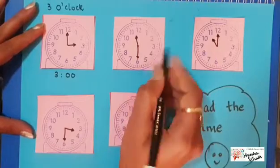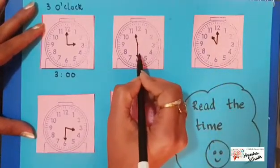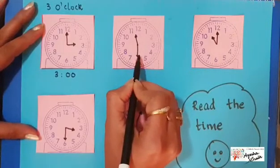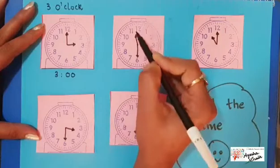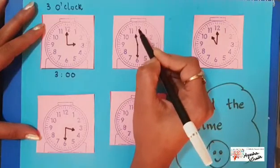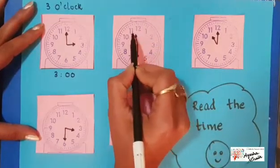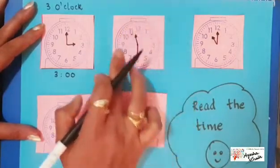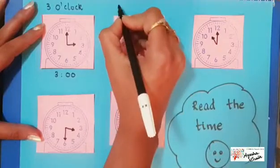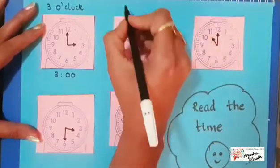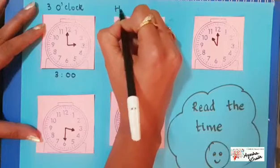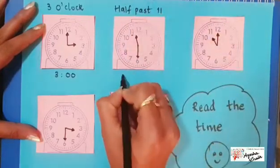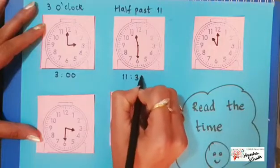What's the time here? The long hand is on 6 and the short hand is between 11 and 12. Long hand on 6 means half past. Since it's between 11 and 12, we look at the number that comes first in the clockwise order, which is 11. So the time is half past 11, also written as 11:30.